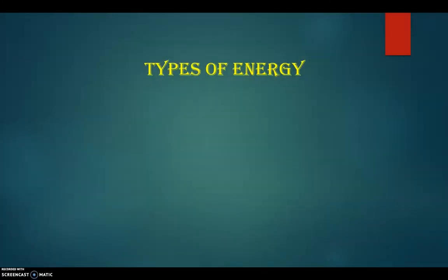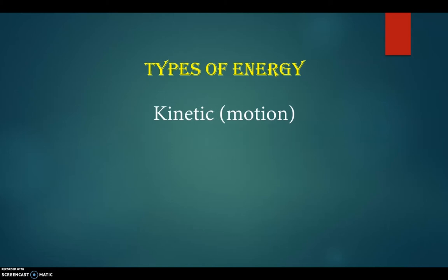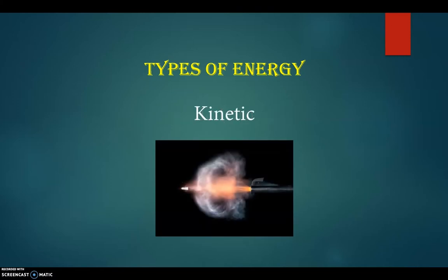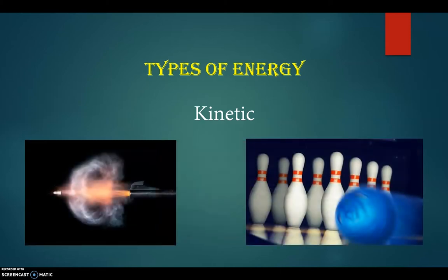There are two basic types of energy. The one you're probably most familiar with is kinetic energy — essentially, kinetic energy is just energy of motion. Any object that's moving has kinetic energy, which depends on two things: how much mass the object has and how fast it's moving. A bullet fired from a gun has a lot of kinetic energy — even though the bullet doesn't weigh much, it's moving very rapidly. A bowling ball moves much slower but is far more massive, so it also has a huge amount of kinetic energy.